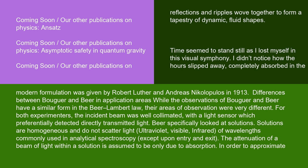Differences between Bouguer and Beer in application areas: while the observations of Bouguer and Beer have a similar form in the Beer-Lambert Law, their areas of observation were very different. For both experimenters, the incident beam was well collimated, with a light sensor which preferentially detected directly transmitted light. Beer specifically looked at solutions. Solutions are homogeneous and do not scatter light at ultraviolet, visible, or infrared wavelengths commonly used in analytical spectroscopy, except upon entry and exit. The attenuation of a beam of light within a solution is assumed to be only due to absorption.